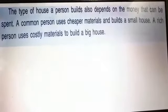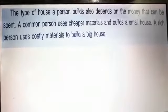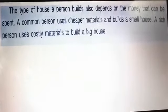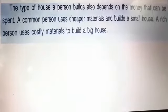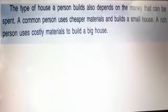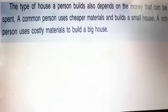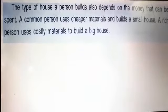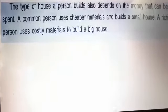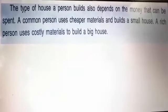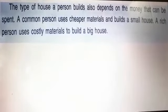The type of house depends on the money a person can spend. A common person uses cheaper, less costly material and builds a small house. A rich person uses costly materials and makes a big house.